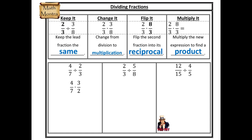Let's try a couple problems together. Four sevenths divided by two thirds — I keep four sevenths the same, change division to multiplication, and flip two thirds to three halves. Now I'm going to multiply it: four sevenths times three halves. Four times three gives me 12. Seven times two gives me 14.